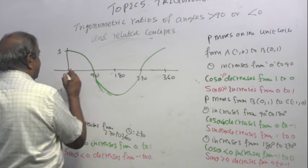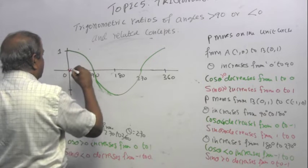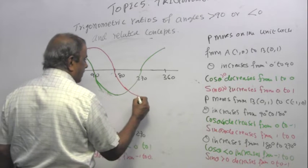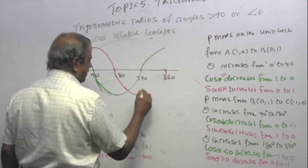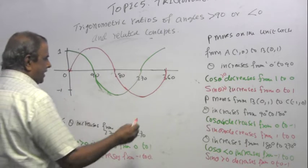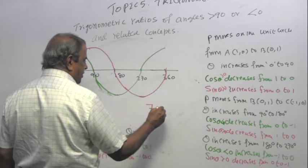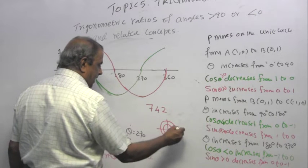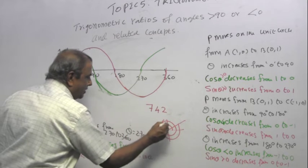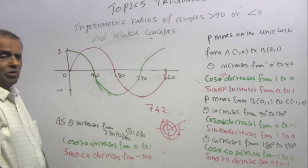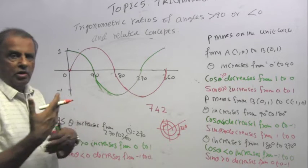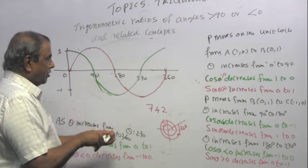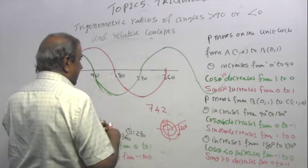For the sin graph: it starts at 0, reaches 1 at 90 degrees, returns to 0 at 180, goes to −1, and comes back to 0 at 360. Now suppose I want an angle of 742 degrees — mathematically that is 360 + 360 + 22 degrees, meaning the point goes round the unit circle twice and ends at 22 degrees. So if you have an angle greater than 360, the values of sin and cos simply repeat.